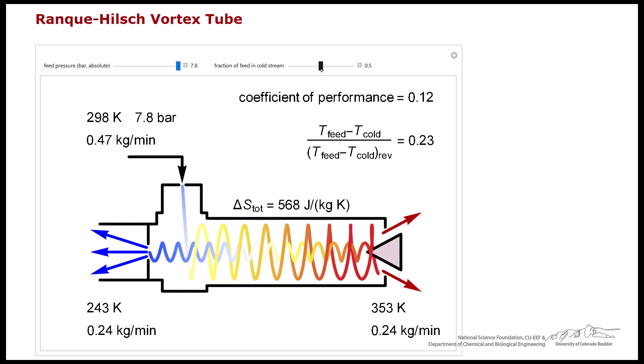If I were to decrease the fraction that's in the cold stream, then I likewise can lower the temperature more so it can get fairly large temperature drop from just the Hilsch tube.